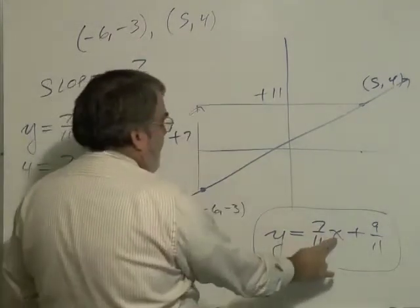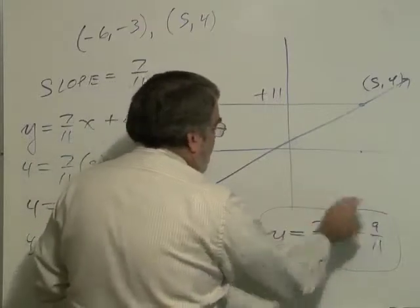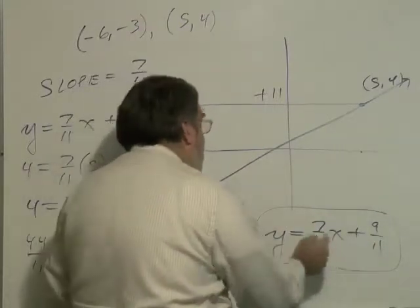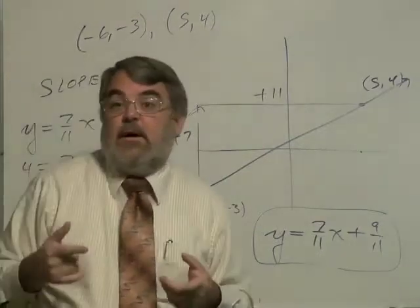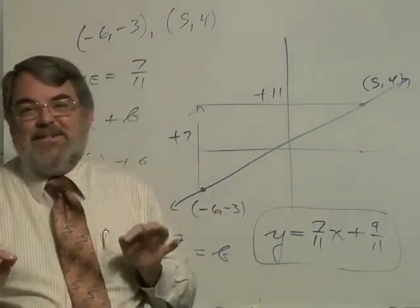If I plug 5 in for x, I've got 35 plus 9 is 44. 44 over 11 is 4. So even those are not too bad to check because we have common denominators.